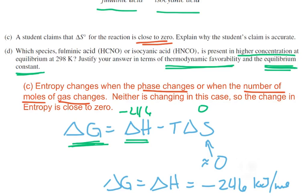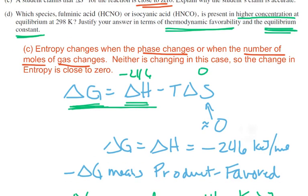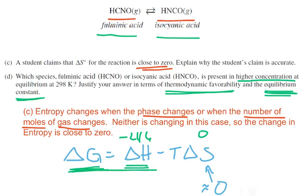Anyway, so the idea is delta G equals delta H, and we know that delta H is negative 246, so the delta G is pretty much negative 246. Now we can kind of calculate that, and we say, well, what that means is negative delta G's, we know that that means we have a product-favored reaction. Negative delta G's mean product-favored reaction.